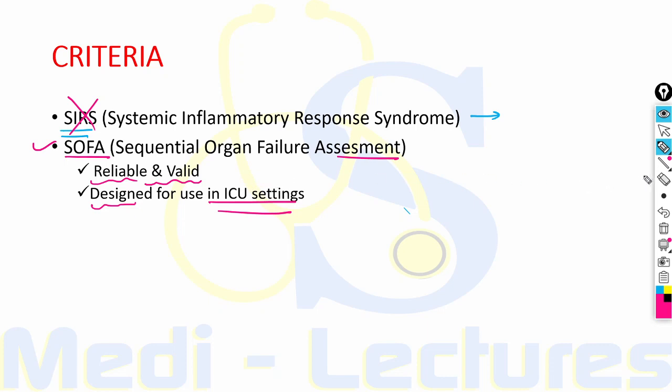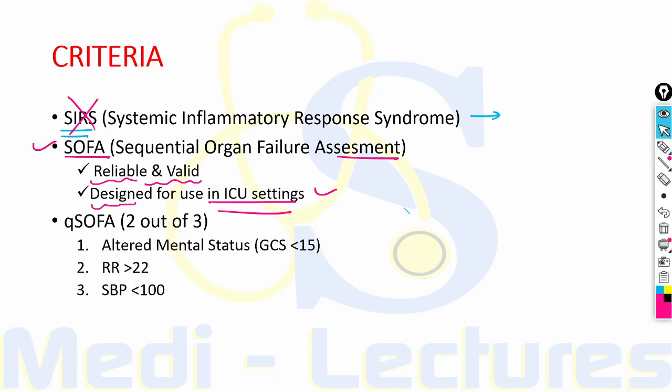Since the SOFA score is based on a variety of lab findings and should be ideally used in ICU settings, when a patient comes in emergency department something known as quick SOFA or Q SOFA can be used.